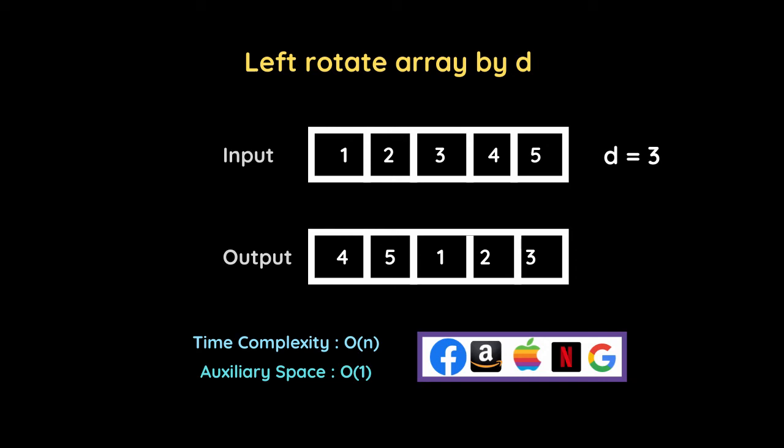Hello and welcome to The Coding Bytes. I am Abhishek Parmar, and in this video we will solve the question of left rotate array by d. The input is an array containing five elements and we have a variable d which is three. What we have to do is move the first three elements to the end of the array, rotating the array by d elements.